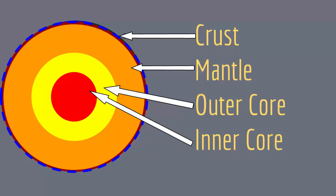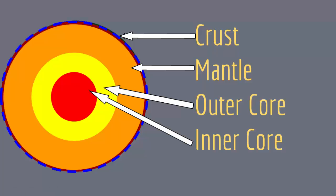So Earth is composed of three layers, or four, since the core is divided into two parts. It is composed of the crust, the mantle, the outer core, and the inner core. The crust is a very thin skin that wraps the Earth, and all the continents, oceans, and water are contained in the crust. The mantle is below the crust and has a very huge volume — it's actually the largest layer. After that comes the outer core and the inner core.